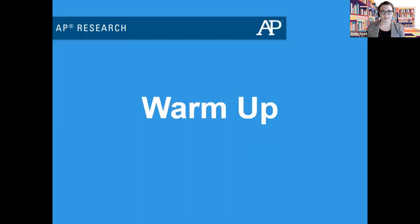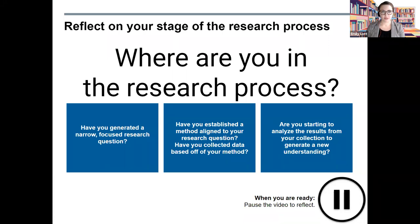Let's get focused with a quick warm-up. Reflect on your stage of the research process — where are you? Have you generated a narrow, focused research question? Have you established a method aligned to your research question? Have you collected data based off of your method? Are you starting to analyze the results to generate a new understanding? Pause the video now to decide where you are. If you have not yet created your method, go back to the AP Research Channel and find the lesson titled Choosing and Aligning Your Research Method, then come back when you're ready. If you have already completed your data collection and are ready to move forward into analysis, stay with me.